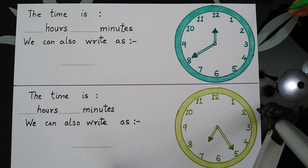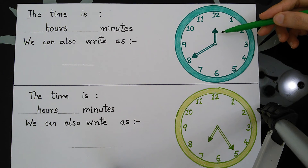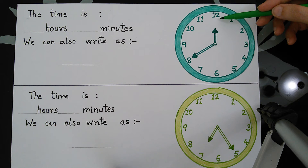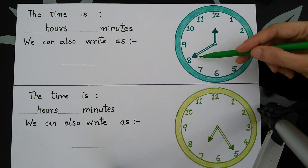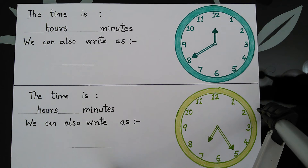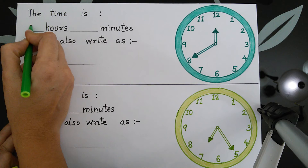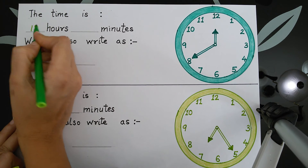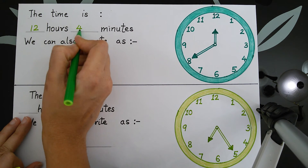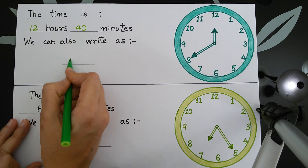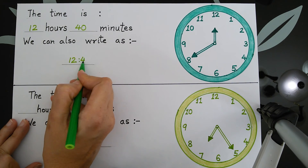Now here is another one. The small hand is on 12 and the big hand is on 8. So we say the time is 12 hours 40 minutes. We will write it as 12 hours 40 minutes or we can write it as 12:40.